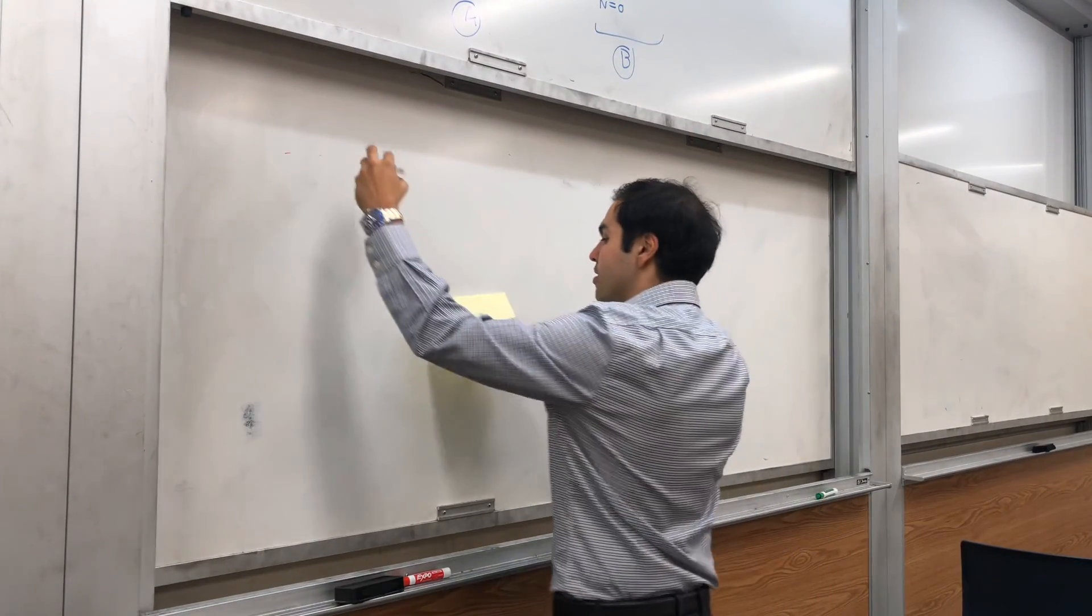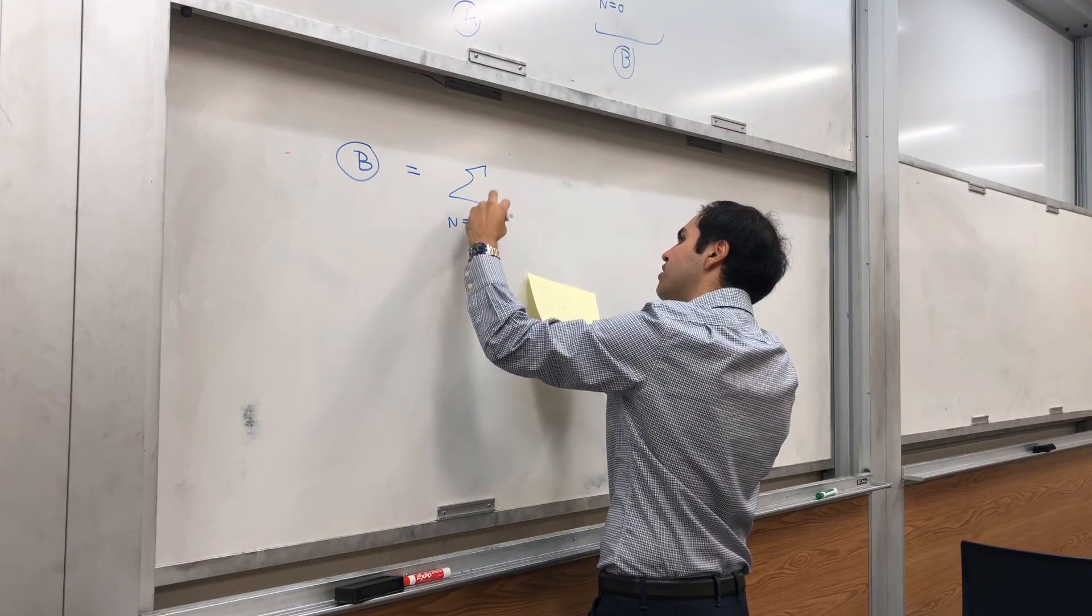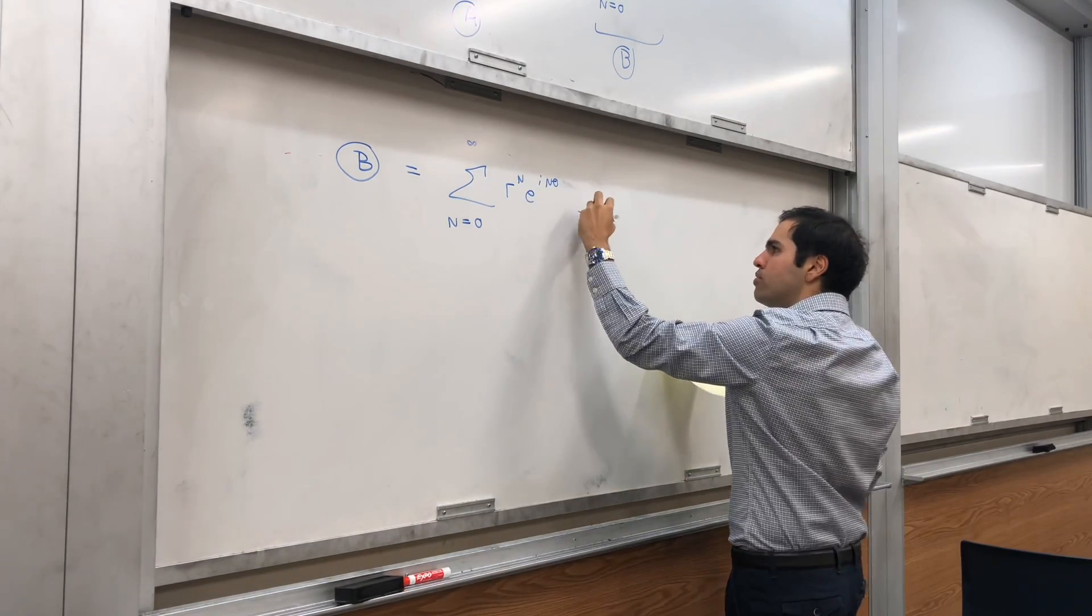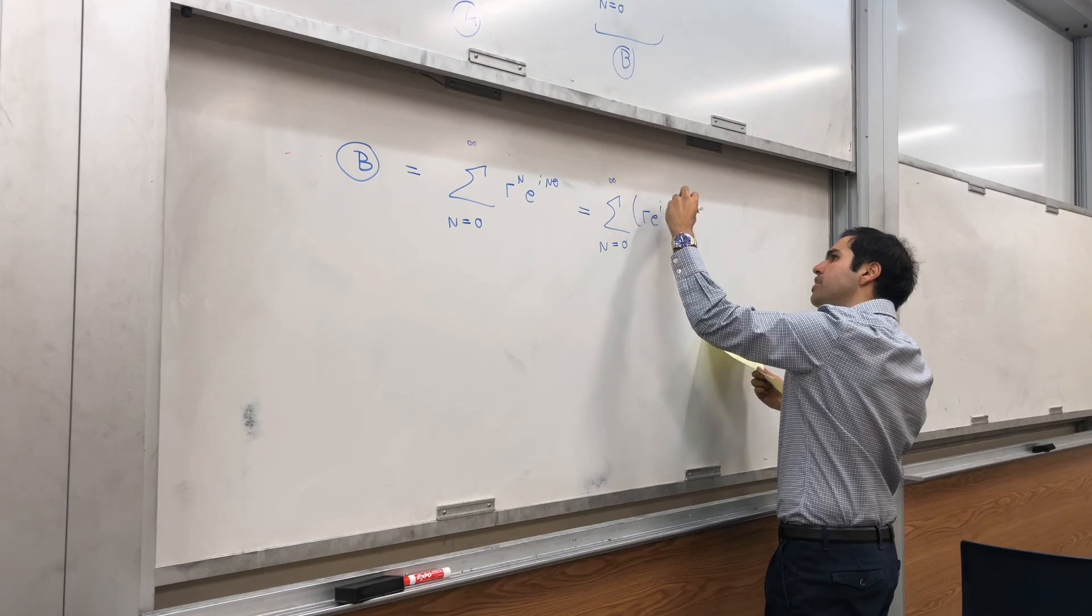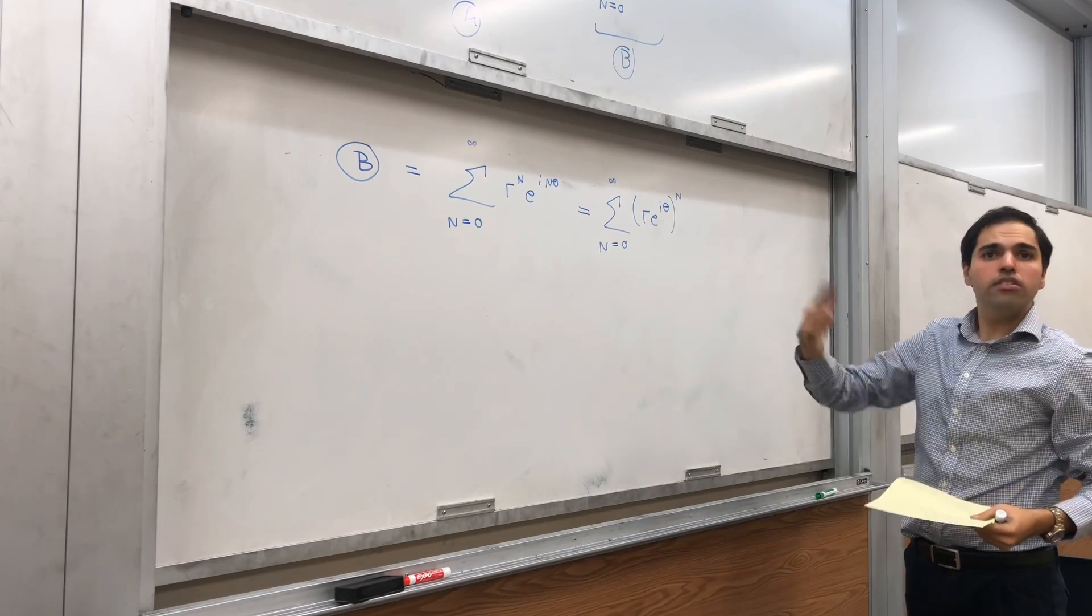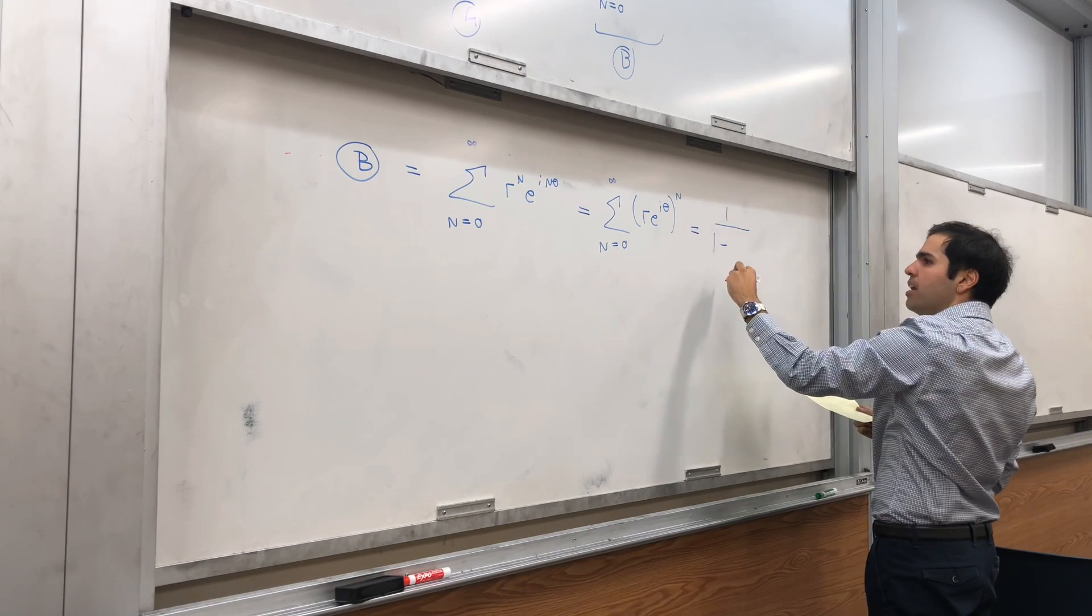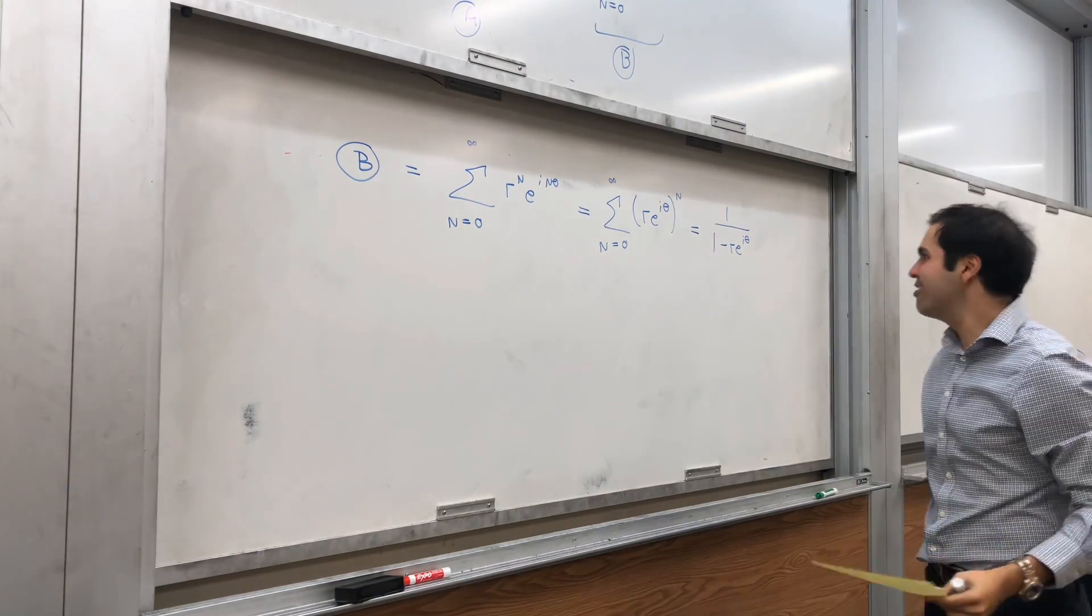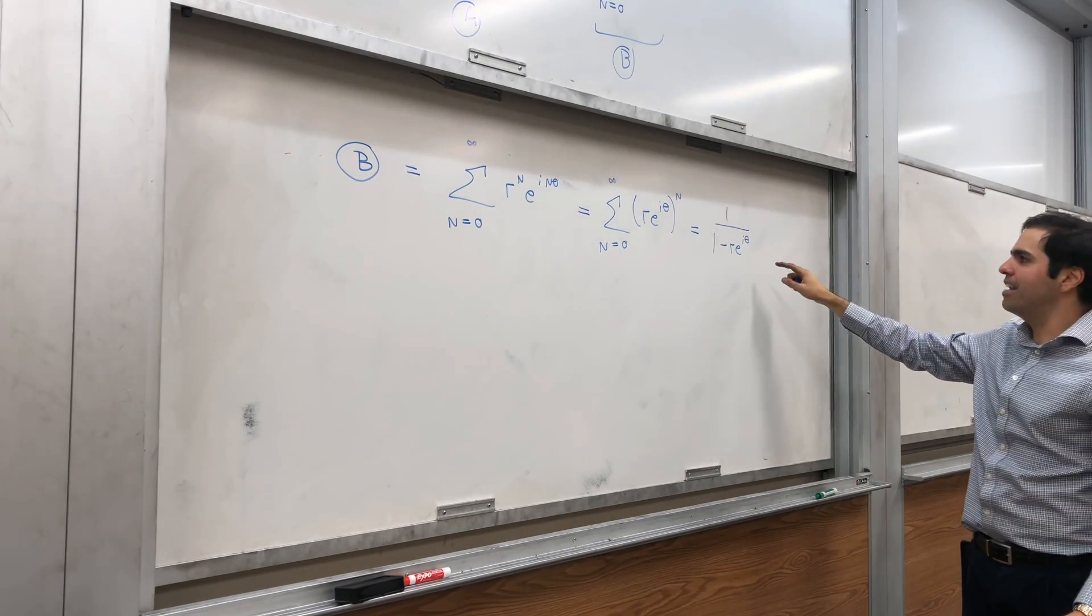So B, it's simply the sum from n from zero to infinity of r^n e^(inθ). But notice, this is just a common factor. So sum from zero to infinity of (re^(iθ))^n. And all you use now is a formula for the geometric series, which says it is just 1/(1 - re^(iθ)). So you use your best friend. I forgot this sweater, unfortunately, but yes. So it is true the sum of x^n is 1/(1-x).